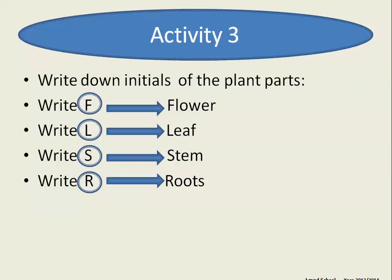Right now we are going to write the initials of plant parts on the picture we have drawn. We will write F for the flower, L for the leaves, S for the stem, and R for roots like this.